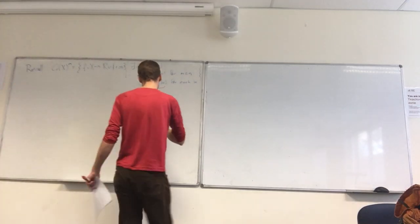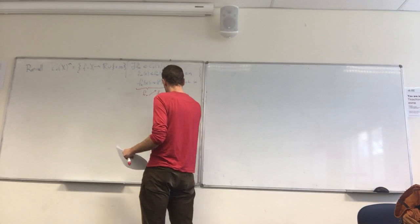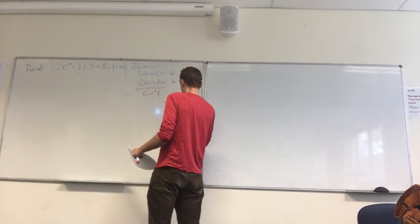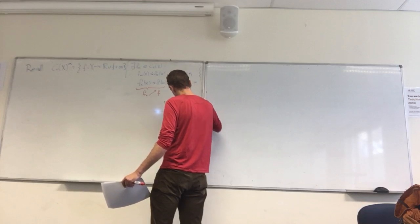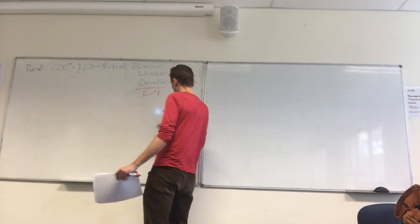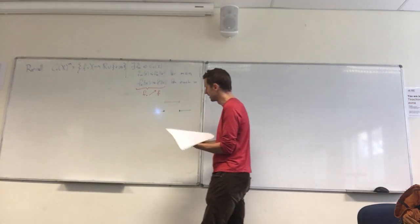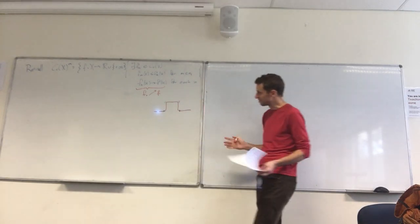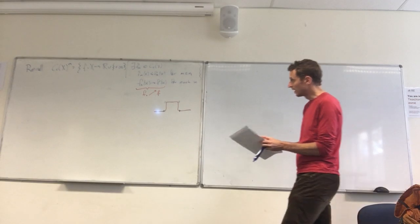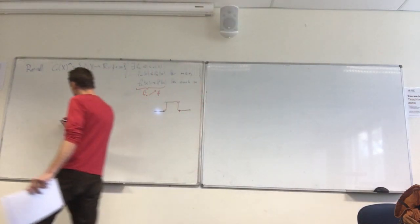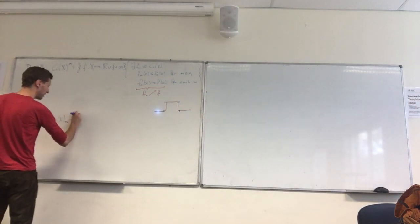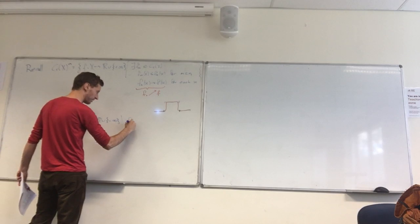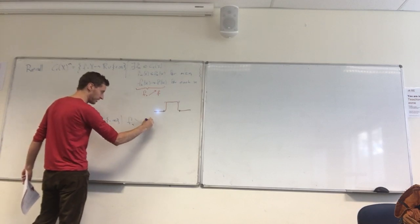The picture to have in mind is a function like this which is not continuous, but you can find compactly supported continuous functions that approximate it from below. We then also had the corresponding CCX lower M, which were functions that possibly took the value of negative infinity, and there we asked that there was a sequence of compactly supported continuous functions converging down to it.